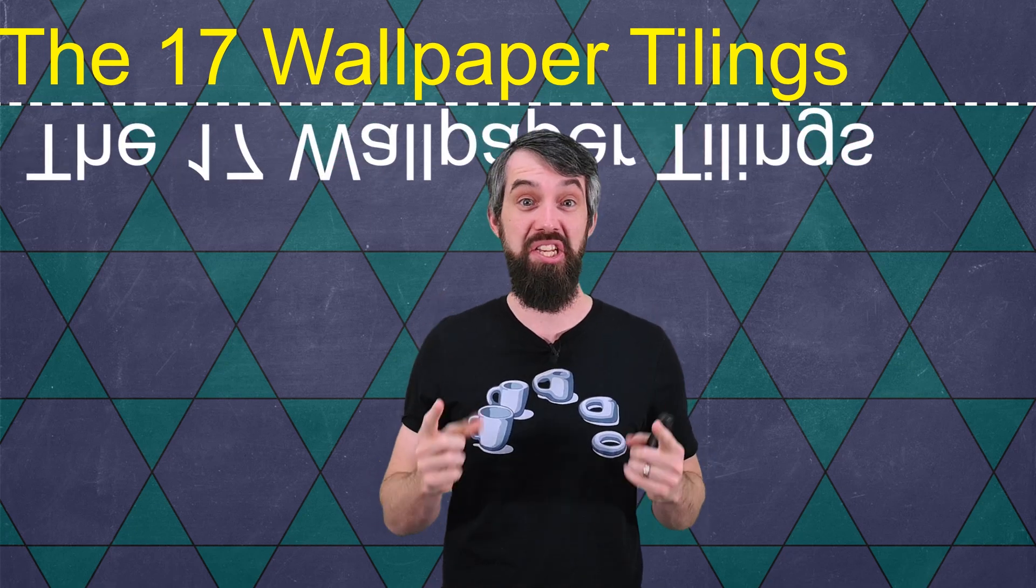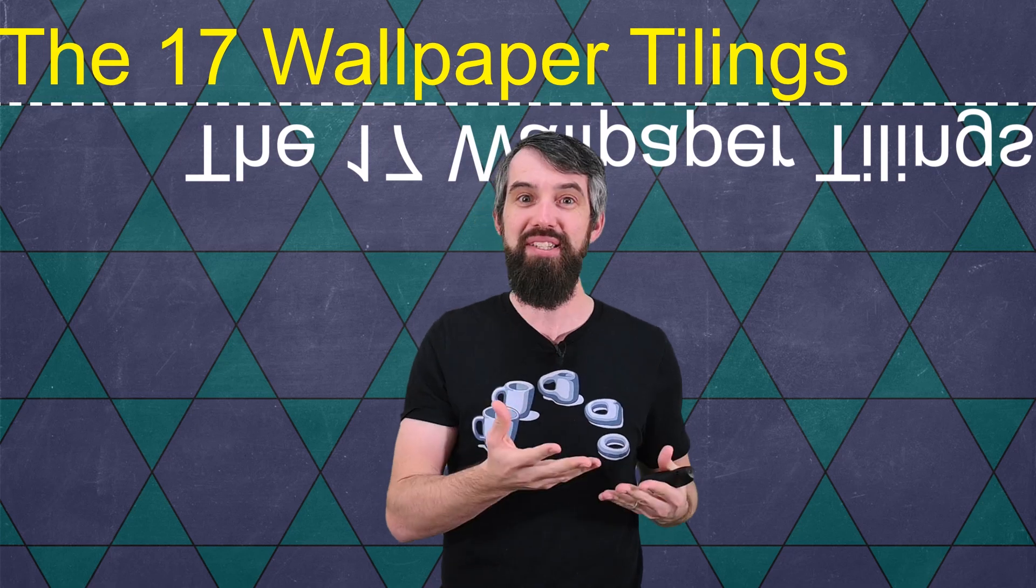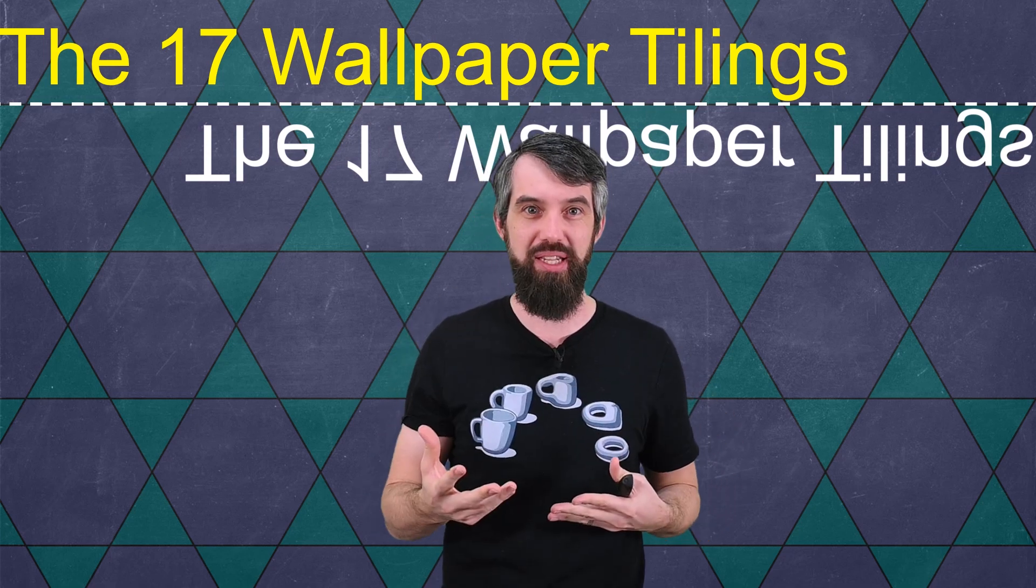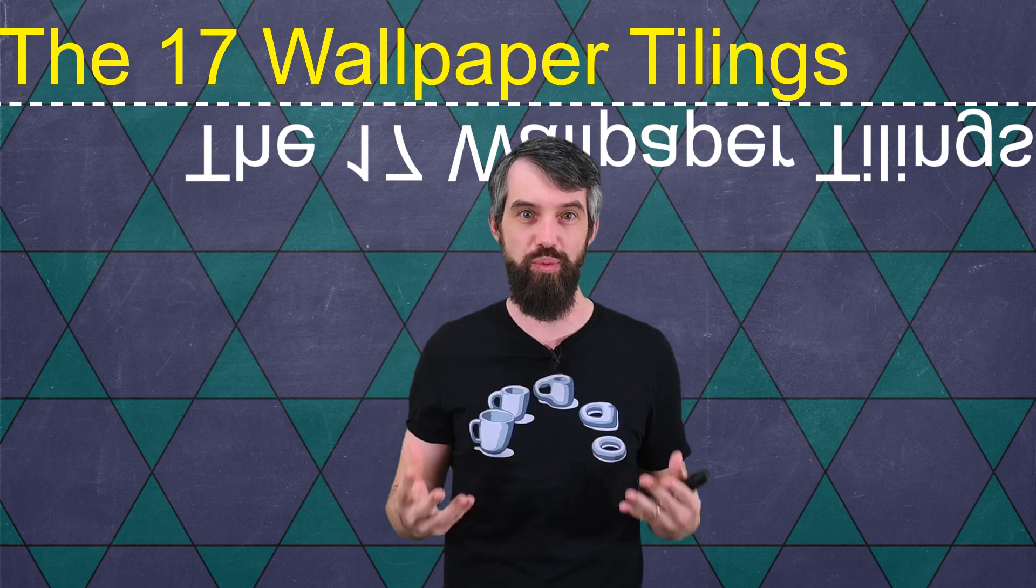There are precisely 17 different possible types of wallpaper. That is, 17 different types of symmetries that allow you to tile the plane in a periodic way like this one.